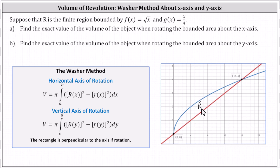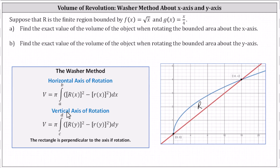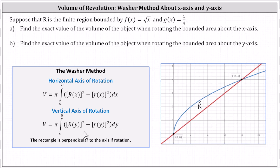We're asked to find the exact value of the volume of the object when rotating the bounded area about the x-axis, and then for part B, find the exact value of the volume when rotating about the y-axis. We'll be using the washer method. When we have a horizontal axis of rotation, we integrate with respect to x, and big R(x) and little r(x) are functions of x — big R(x) is the outer radius, little r(x) is the inner radius. When we have a vertical axis of rotation, we integrate with respect to y and big R and little r must be functions of y. It's important to have the graph of the bounded region and also to sketch a representative rectangle that is perpendicular to the axis of rotation.